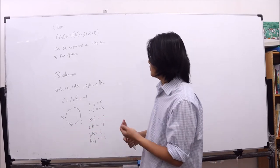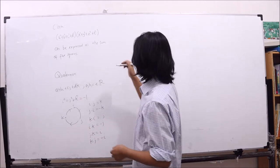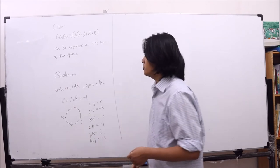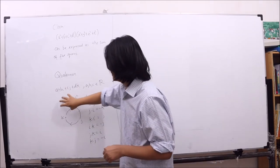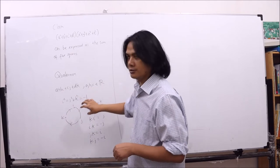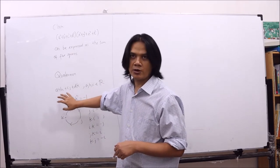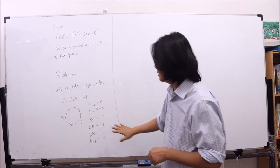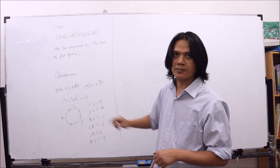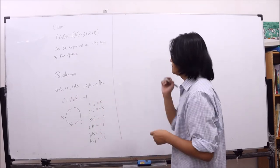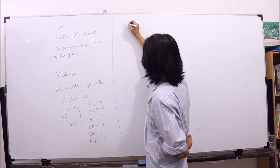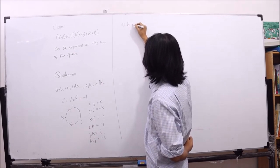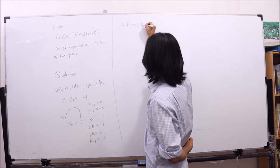When we multiply two quaternions we use the distributive property along with the conventions that i² = j² = k² = -1 and the ij, jk, ki rules. For example, let's multiply (a + bi + cj + dk) with its conjugate.